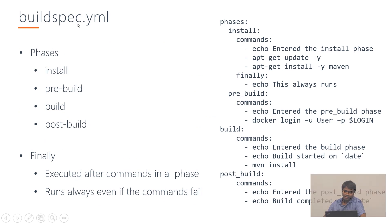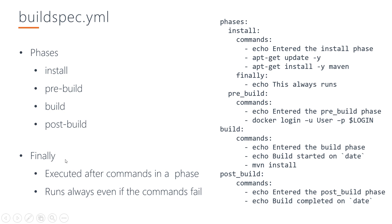The CodeBuild specification has several phases: install, pre-build, build, and post-build. Inside these phases we can have as many commands as we want. Every phase has a 'finally' block that runs even if that phase fails — for example, if a test fails in the pre-build or build phase, the finally step can still run to generate a notification or cache the modules. Here is a sample phase configuration with install, pre-build, build, and post-build, each having commands and a final stage.